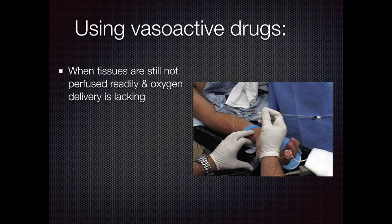Vasoactive drugs are only used when other measures of correcting a low cardiac output have been sorted out, and it is either an issue of ensuring preload is maintained or to augment contractility. For example, only after fluid therapy is proven to be not effective, and there remain signs that the tissue is not being perfused readily enough, will vasoactive drugs be used.